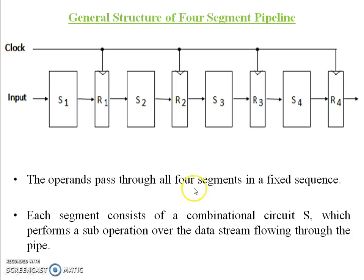The operands pass through all four segments in a fixed sequence. Each segment consists of a combinational circuit S which performs a sub-operation over the data stream flowing through the pipe.